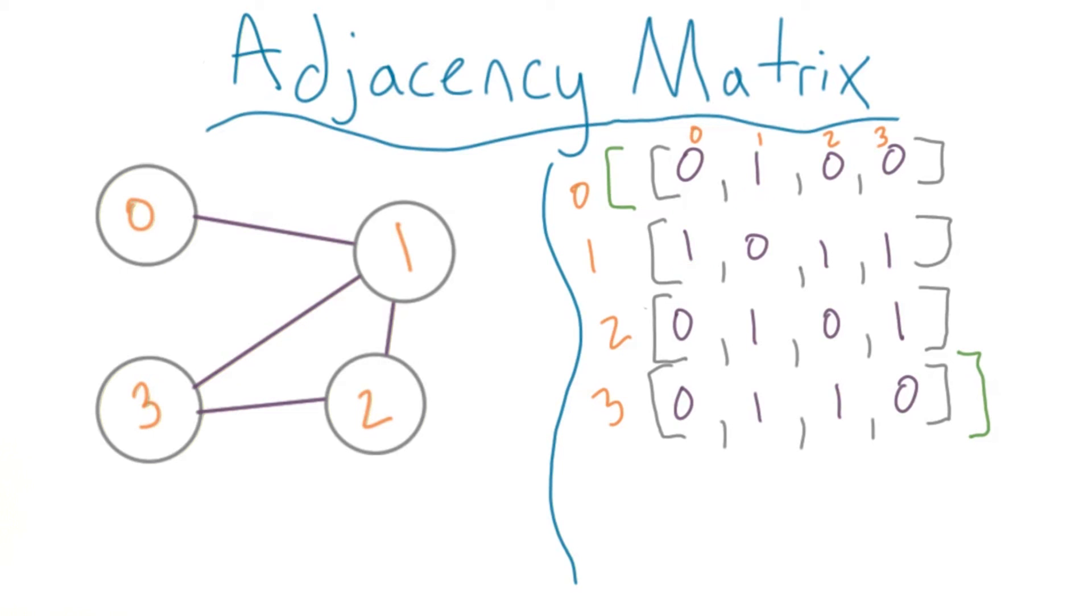Which method of representation you use depends on what makes the most sense for you, and what operations you'll be performing the most often. If you're looking at node degree, or the number of edges connected to a particular node, the adjacency list will probably be the fastest.